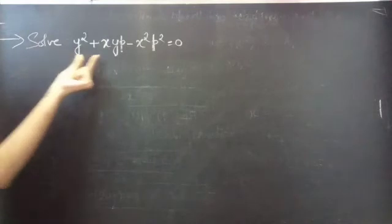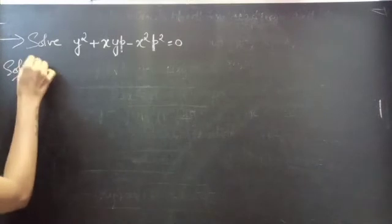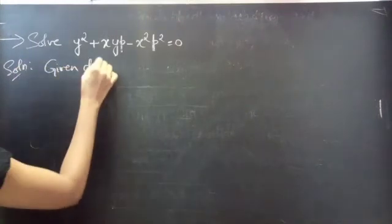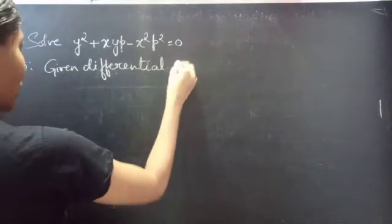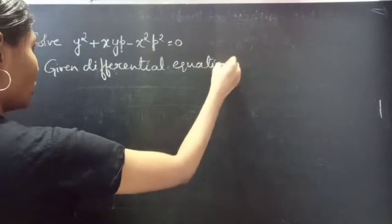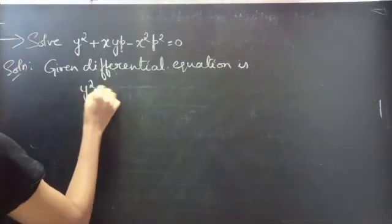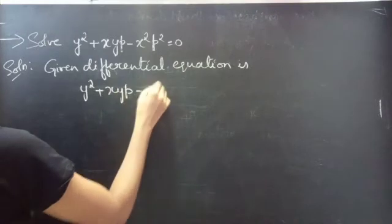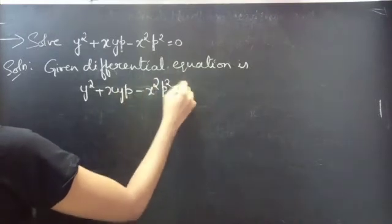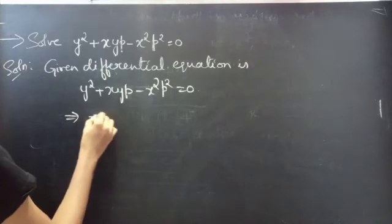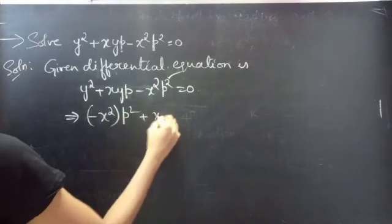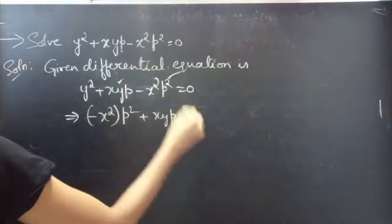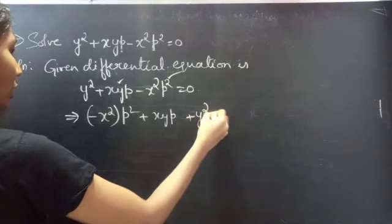Problem: y squared plus xy·p minus x squared·p squared equals 0. The given differential equation is y squared plus xy·p minus x squared·p squared equals 0. We can rewrite it as minus x squared·p squared plus xy·p plus y squared equals 0.